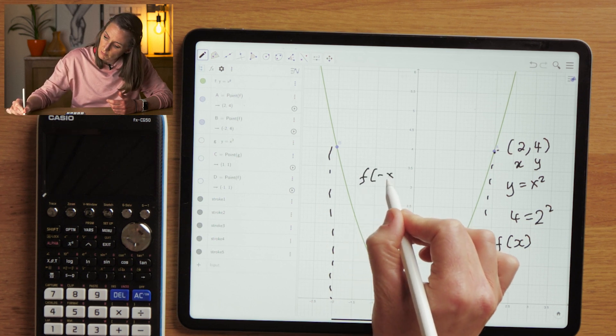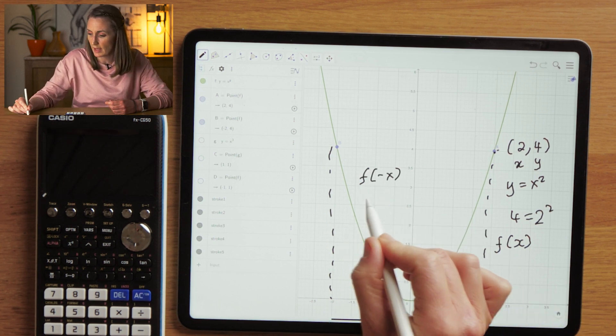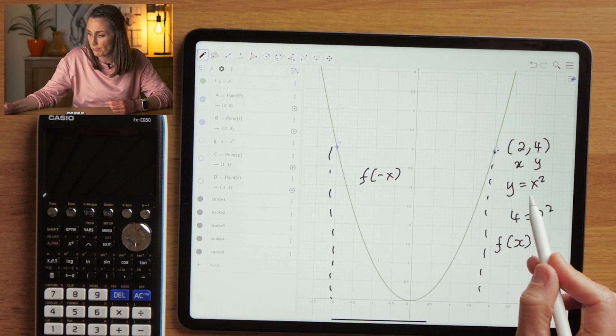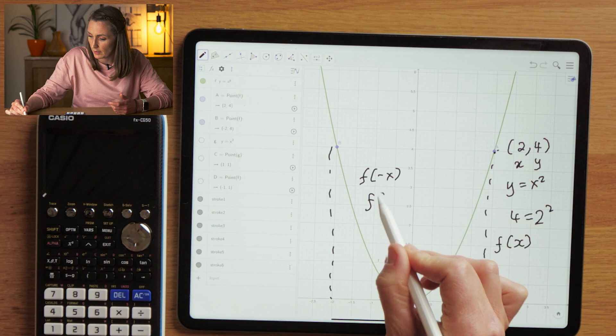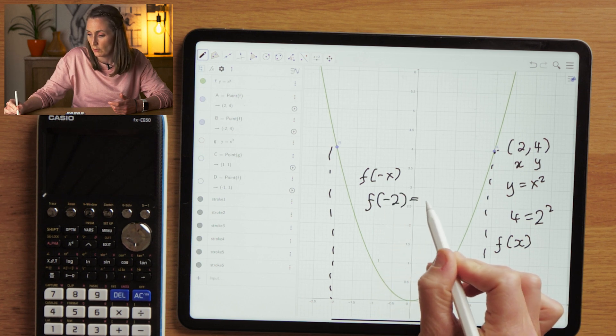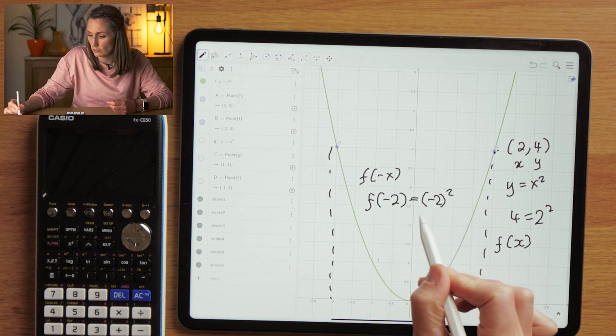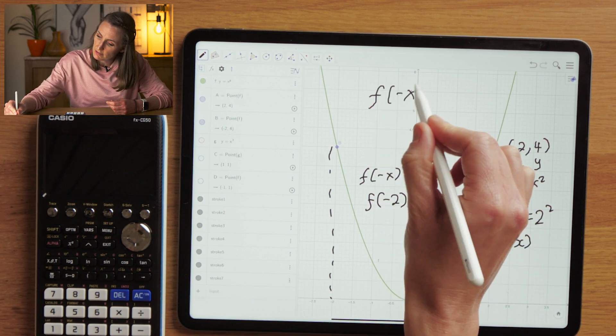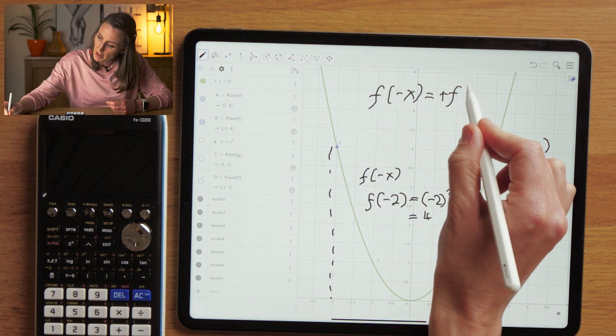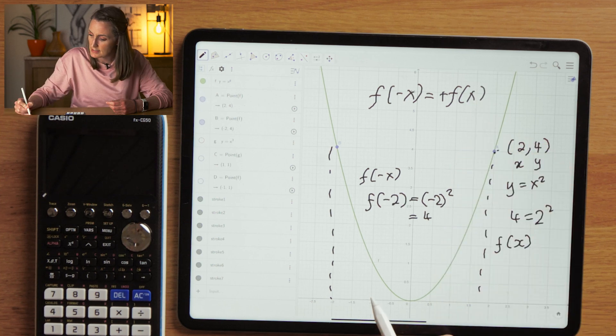Now here, looking at minus 2, would be my f of minus x, which means in this case, well, we already proved that x squared. In this case, we would have f of minus 2 would be equal to minus 2 squared, which would be equal to 4.